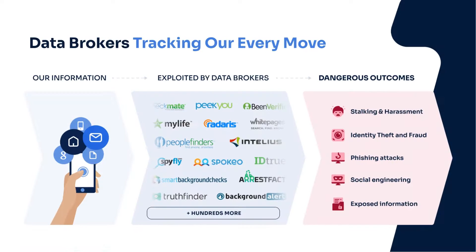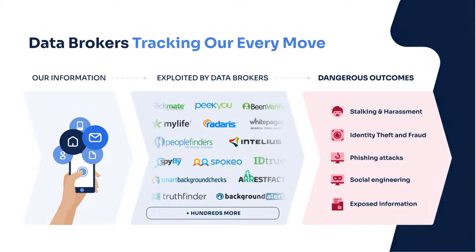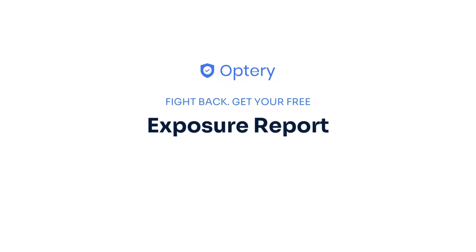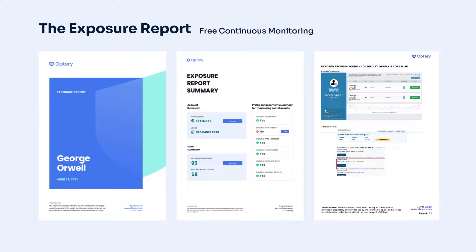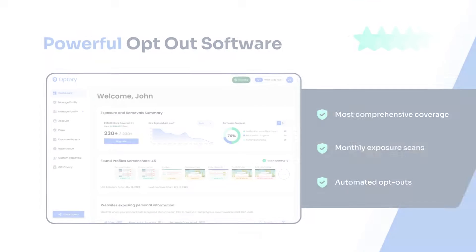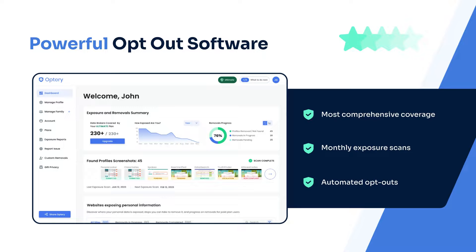However, there are hundreds of people search sites. They are constantly changing and it's nearly impossible to stay on top of these data brokers. That is why Optory offers the free exposure report. The exposure report shows screenshots from sites that have your data with links to let you see that data right on the site. Use the exposure report and our how-to guides to opt yourself out for free, or sign up for an Optory paid plan and Optory will handle the monitoring and removals for you and your family members.